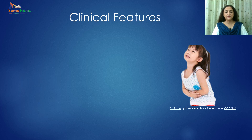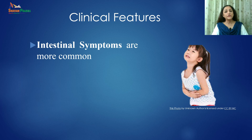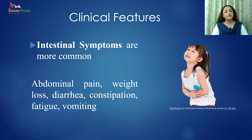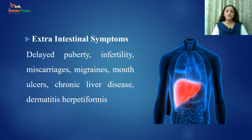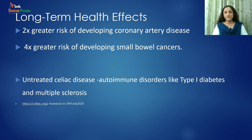Coming to the symptoms of celiac disease, there are more than 200 signs and symptoms associated with celiac disorders. Intestinal symptoms are more common, such as abdominal pain, weight loss, diarrhea, constipation, fatigue and vomiting. There are also extra-intestinal symptoms such as delayed puberty in children, infertility, miscarriages, migraine, mouth ulcers, chronic liver disease, and dermatitis herpetiformis. We can consider celiac disease as a syndrome because of the wide spectrum of clinical manifestations and involvement of various human systems.